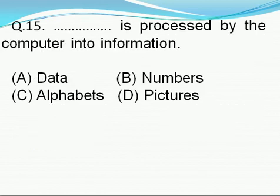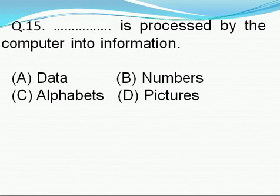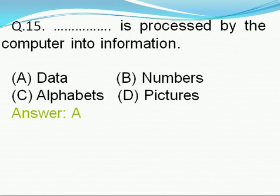Question number 15: Dash is processed by the computer into information — option A: data, option B: numbers, option C: alphabet, option D: picture. Right answer is A, i.e., data. Data is processed by the computer into information.